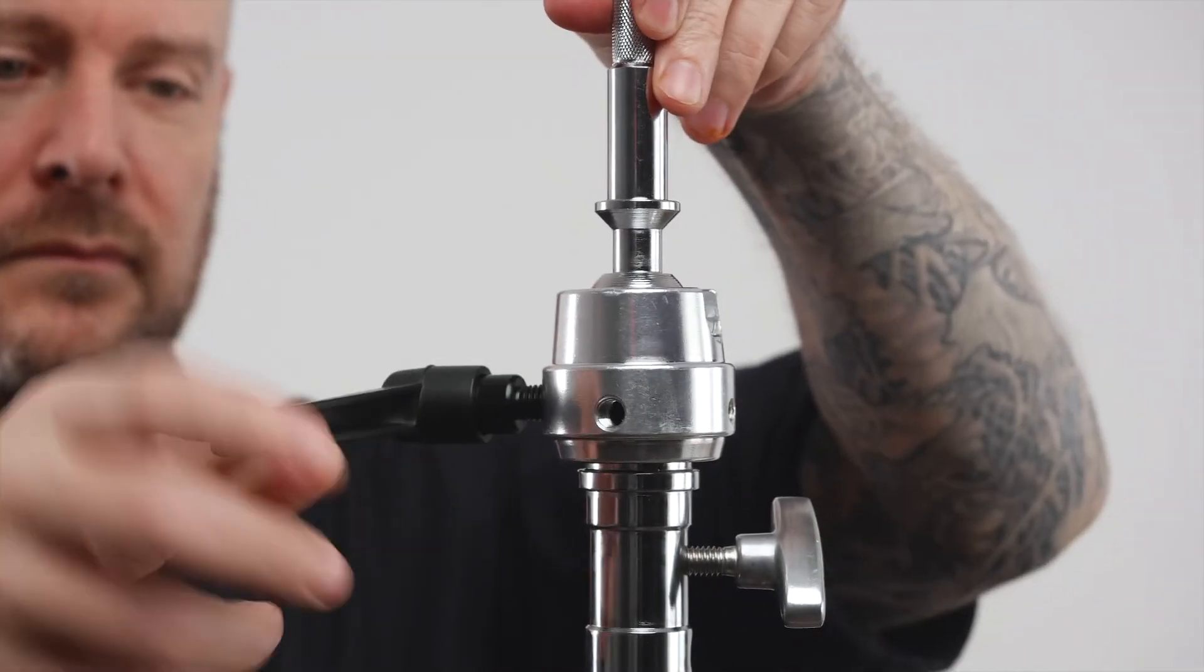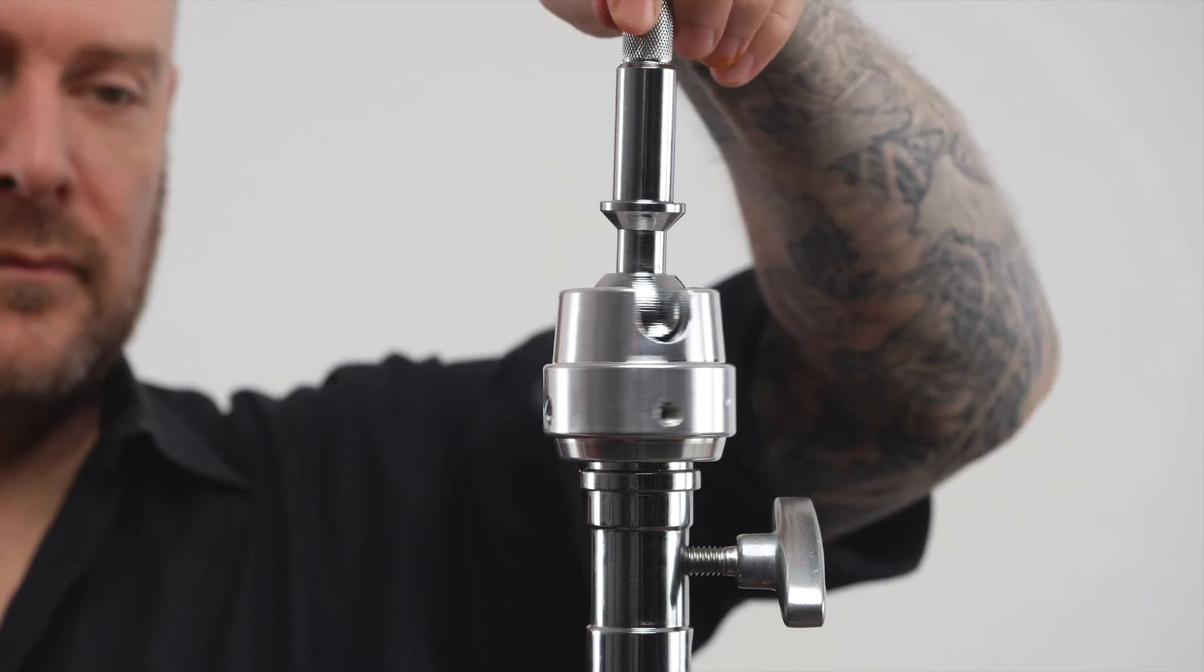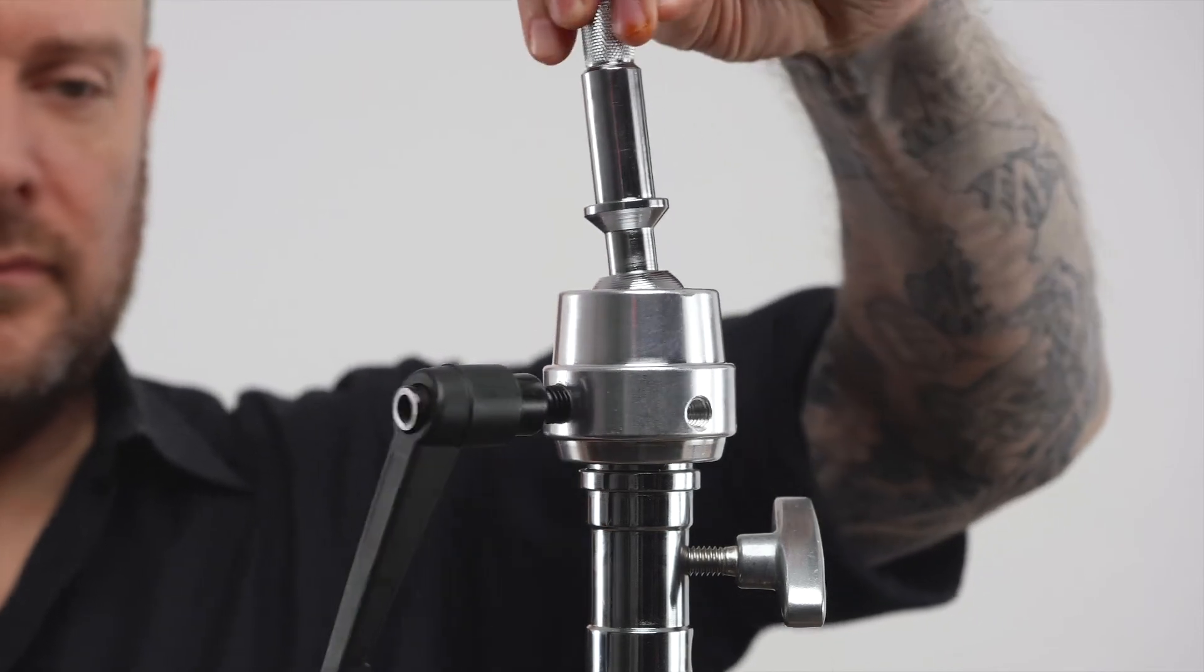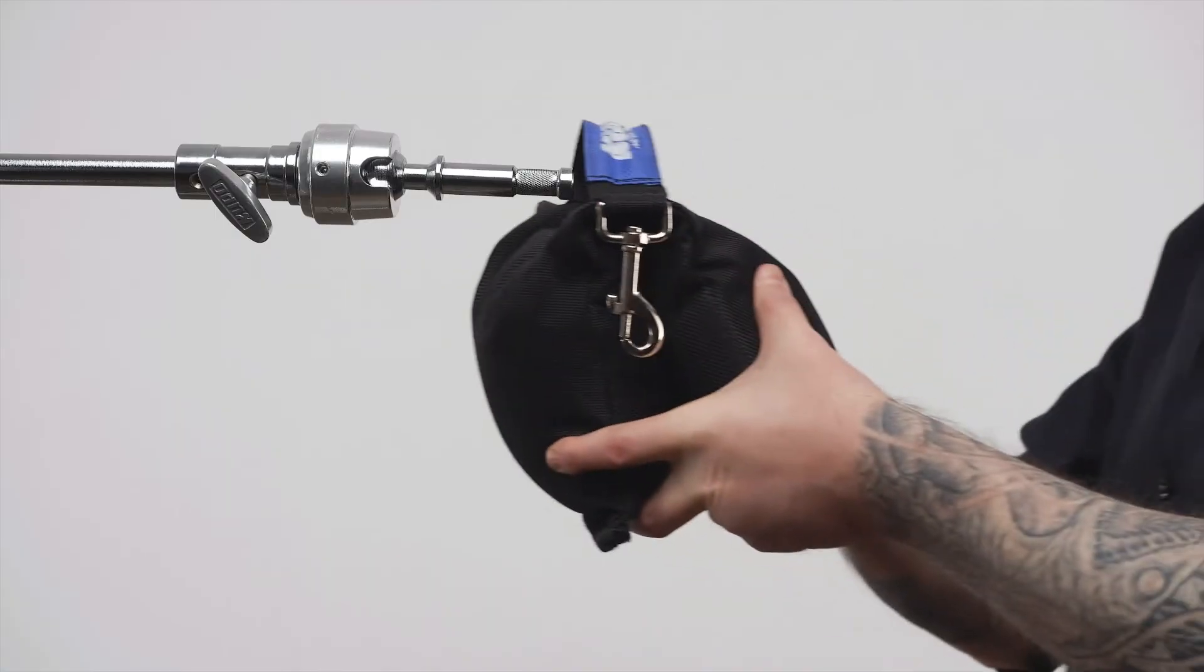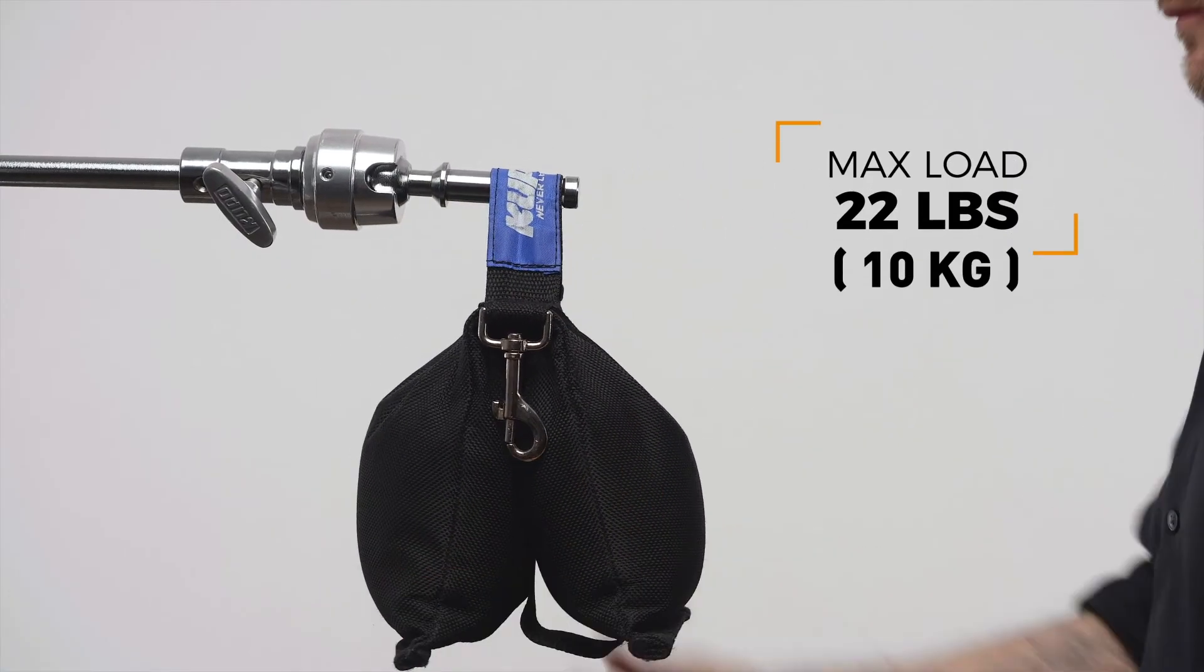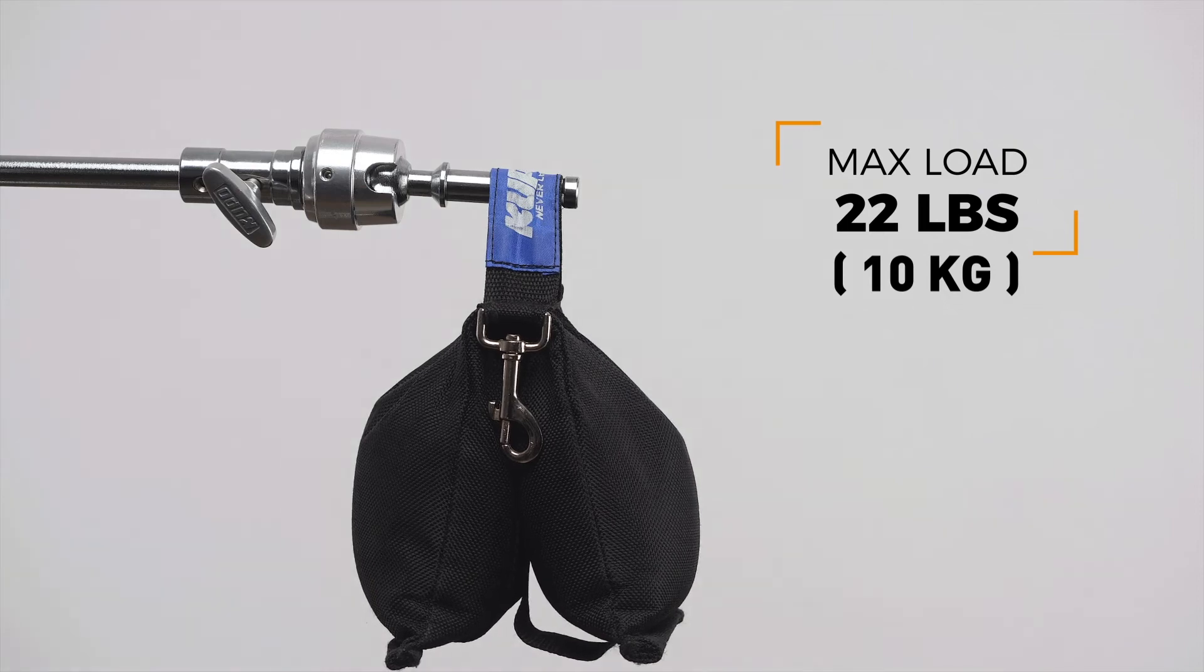By loosening the ratcheting handle securing the ball joint, the base also easily rotates 360 degrees for further positioning flexibility. The ball and socket joint is quite strong and holds an impressive 22 pounds.